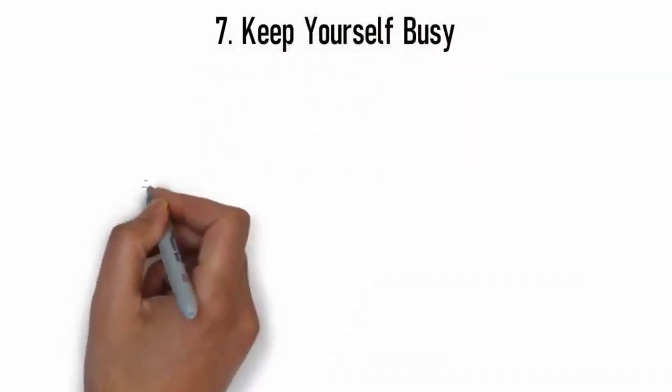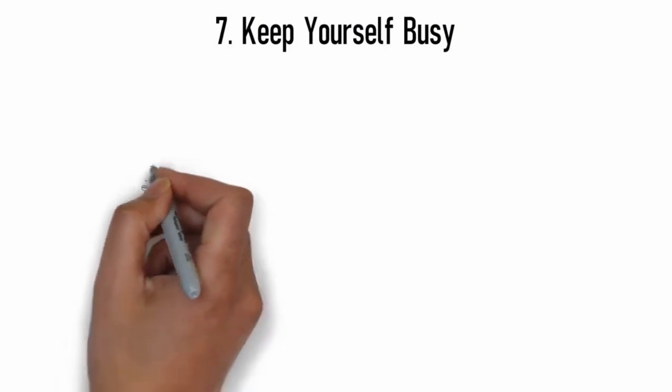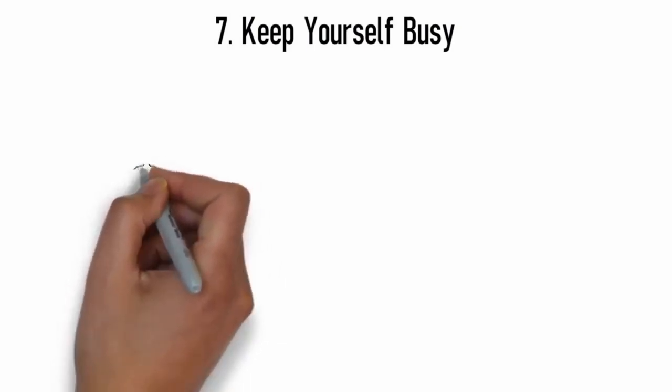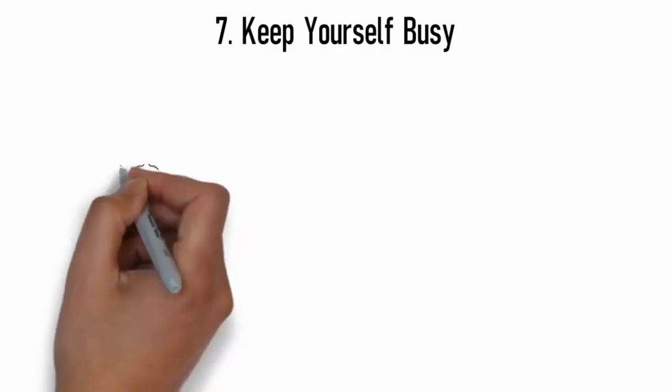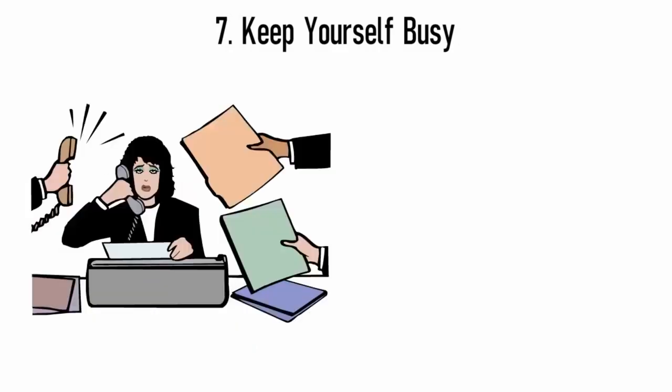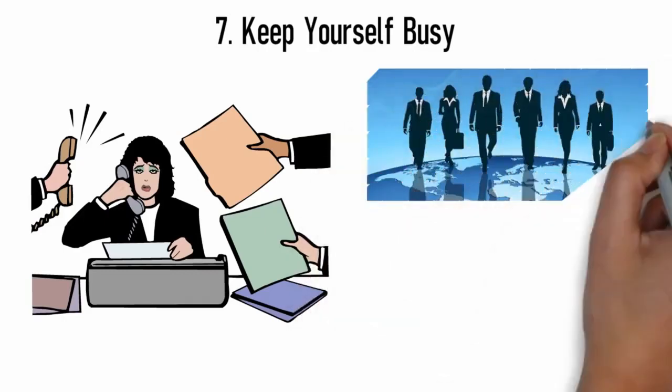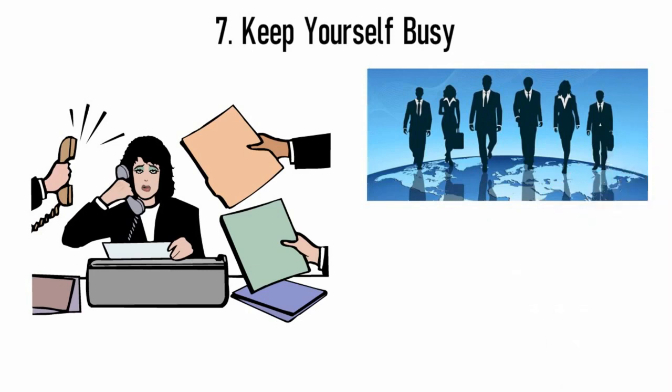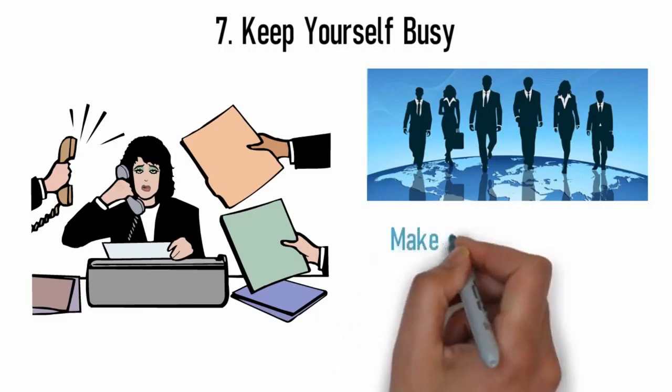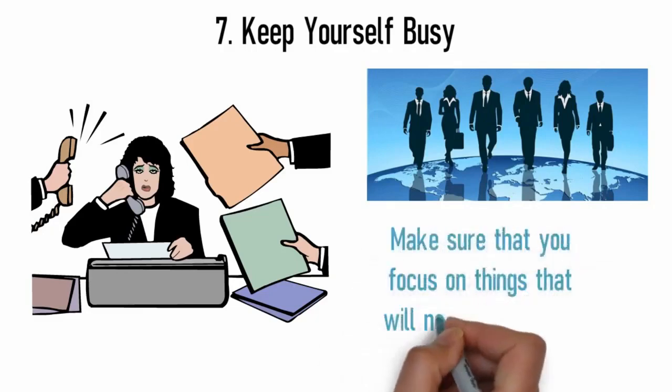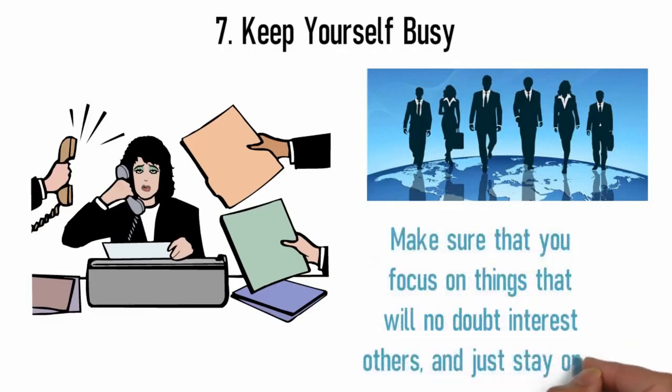7. Keep yourself busy. The next thing that you need to do is simple, keep yourself busy. Make sure that you're busy with hobbies and friends, and don't just isolate yourself with one woman. There's nothing wrong with exploring hobbies, so do it. Keep yourself busy, and you'll be asked questions and different things from the dates you have. Focusing on learning how to stop running out of things to say to women should not be the only thing that you're doing. Make sure that you focus on things that will no doubt interest others, and just stay open.